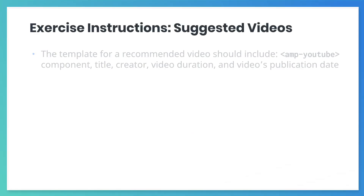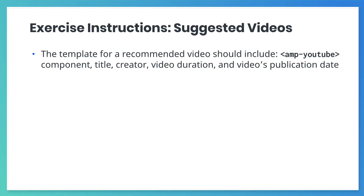In the template for a recommended video, include an AMP YouTube component, the title of the video, the creator of the video, the video duration, and the video's publication date.